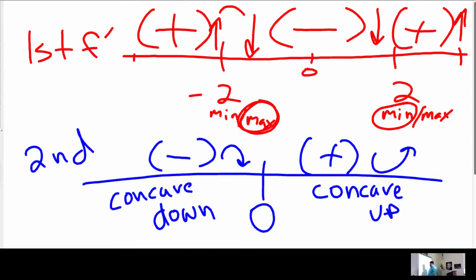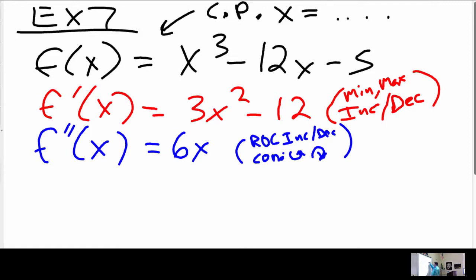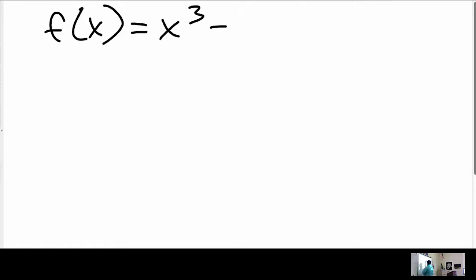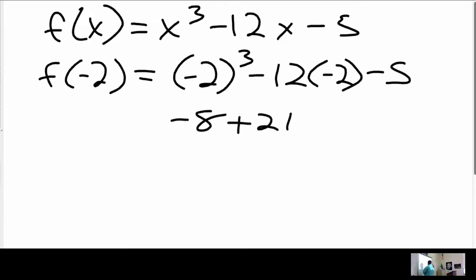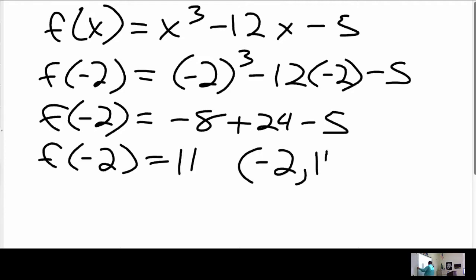The last step in this process is to plug those critical points into f of x. I need negative two, zero, and two. So f of x was x cubed minus 12x minus 5. F of negative 2 is negative 2 cubed minus 12 times negative 2 minus 5. This becomes negative 8 plus positive 24 minus 5, which gives us 11. So the point negative 2, comma 11 is going to be on my graph, and we said that was a max.